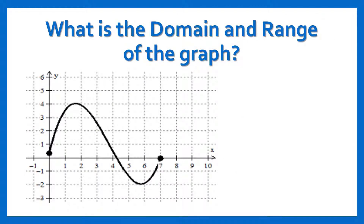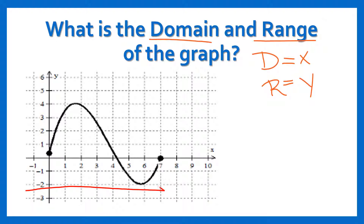Let's go through this. Remember, domain — D comes before R in the alphabet — so domain is our x-values, our input, and range is our y. When we figure out our domain we are looking from left to right, because that's like our x-axis. We find our graph and we can see that our first point is right here. Our x-value there is zero because it's right on that line.